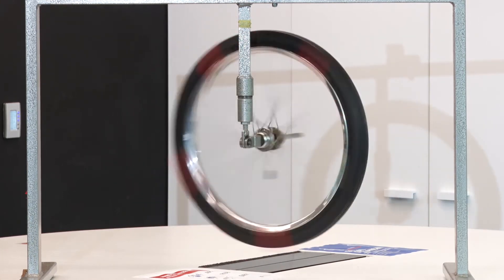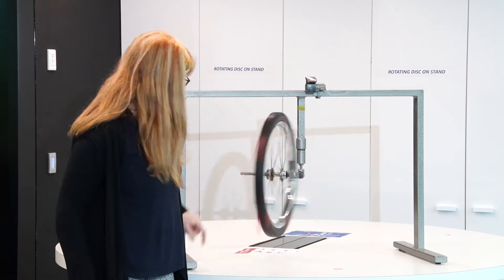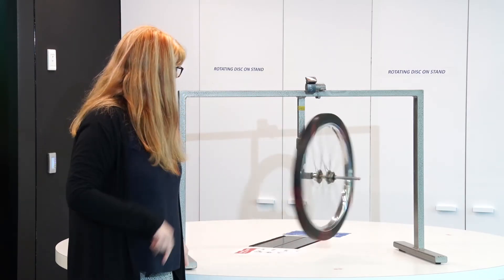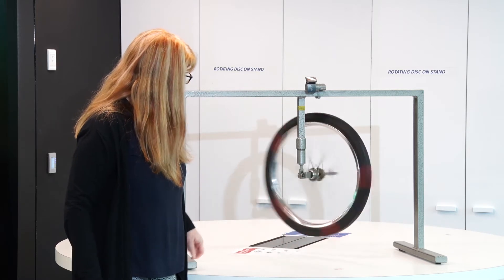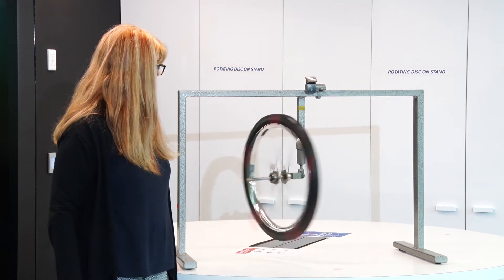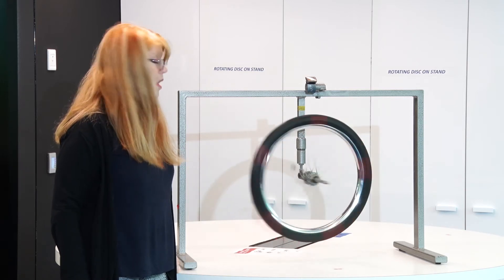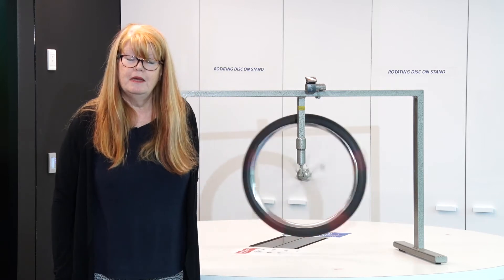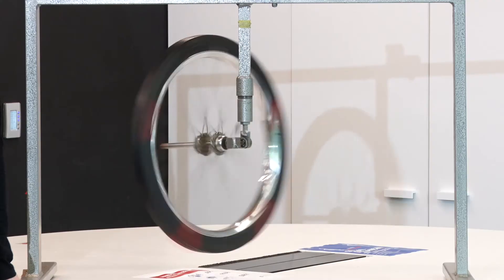It spins around its axis and the axis itself precesses around the vertical. So what is going on here? Why doesn't the wheel fall over when it's spinning and it does fall over when it's not spinning?